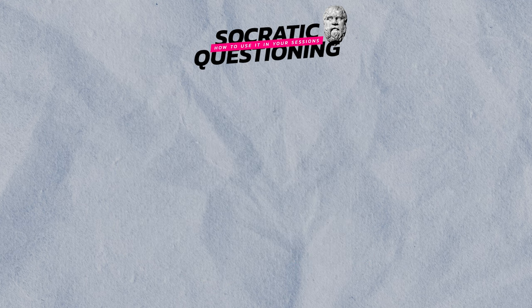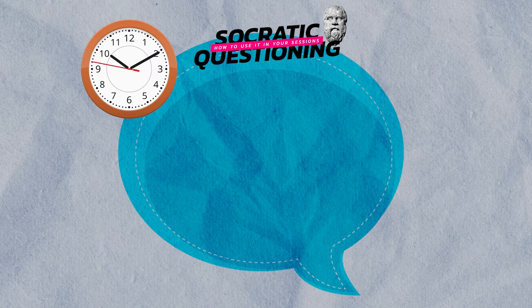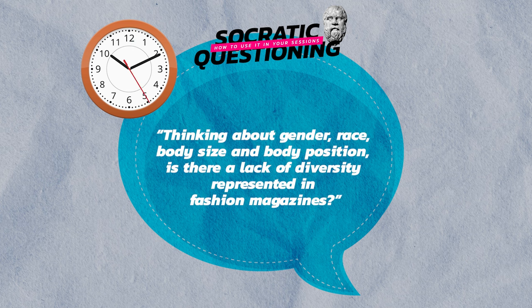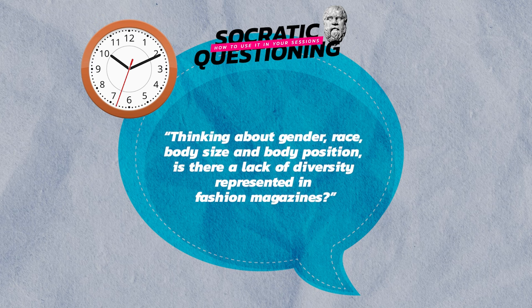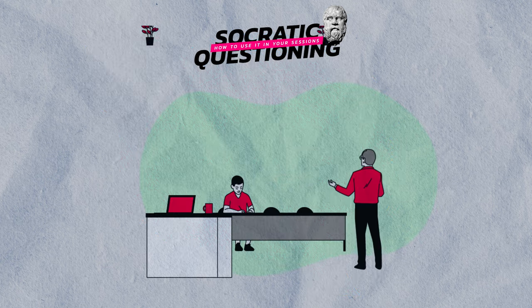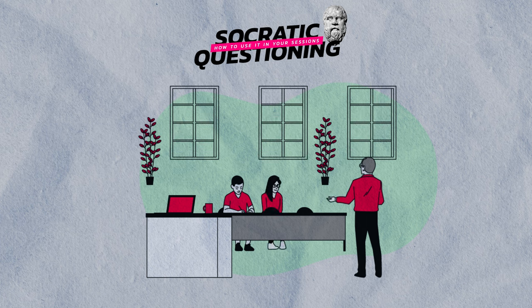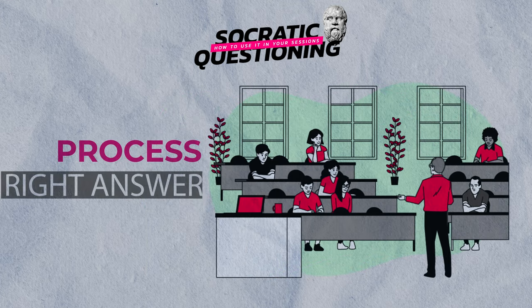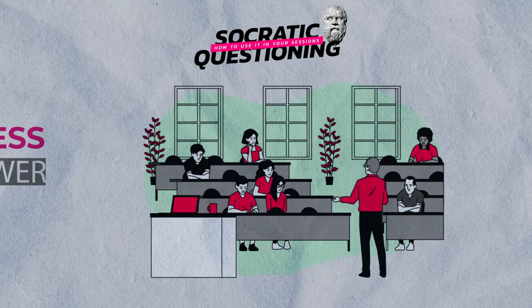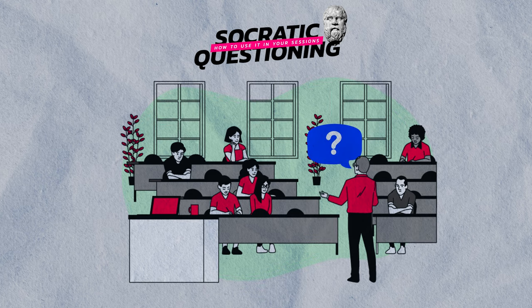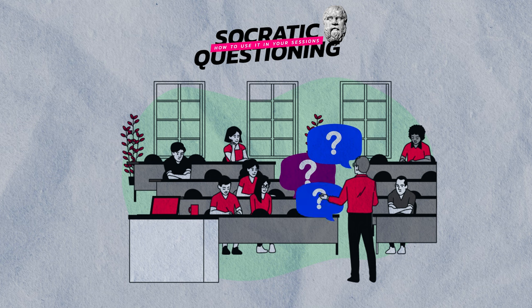In practice, it might look like this. You could start with a five-minute question exploring the main theme of the lesson. For example, in a fashion design lesson, you could ask: thinking about gender, race, body size and body position, is there a lack of diversity represented in fashion magazines? Although students may not have studied this topic before, they can draw on their prior knowledge to identify potential answers. You could encourage them to express their ideas first in pairs, then as a class, and reiterate that the process is more important than finding a right answer. Probe students' understanding with further queries. Always try to answer a student's question with another question, as it's their ideas and answers that are important, not yours.